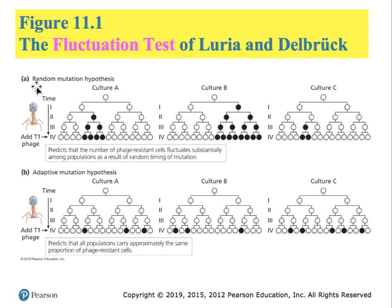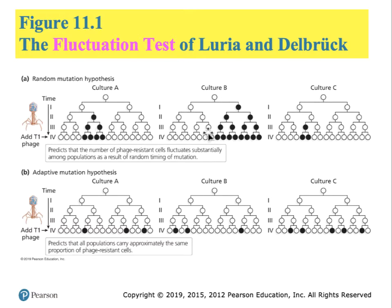In the random mutation hypothesis experiment, by the fourth generation different cultures would have produced different resistant populations of bacteria. In the adaptive mutation hypothesis, every culture examined should have produced equivalent numbers of resistant bacteria. The actual results supported the random mutation hypothesis, which means that the mutations already existed in the bacteria to confer resistance to the virus. If the virus was present, the resistance was simply a benefit.